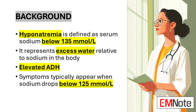Hyponatremia is a common electrolyte disorder characterized by a serum sodium level below 135 millimoles per liter. This condition represents an imbalance where there is an excess of water relative to sodium in the body. The underlying mechanism often involves elevated levels of antidiuretic hormone, which plays a crucial role in water retention.